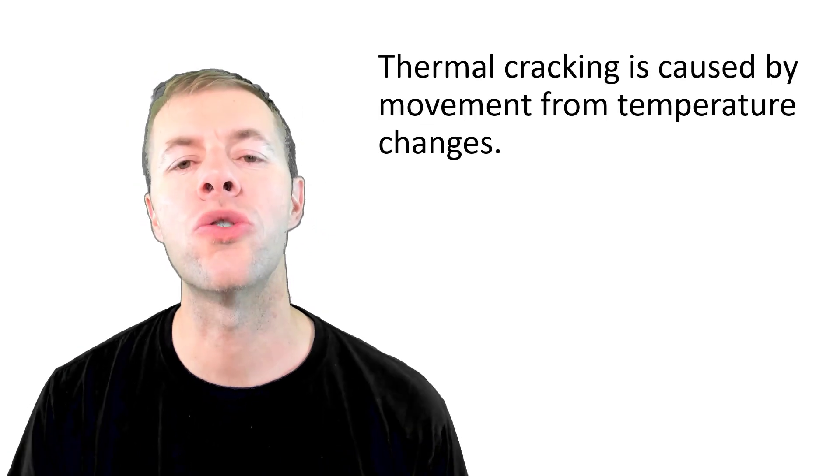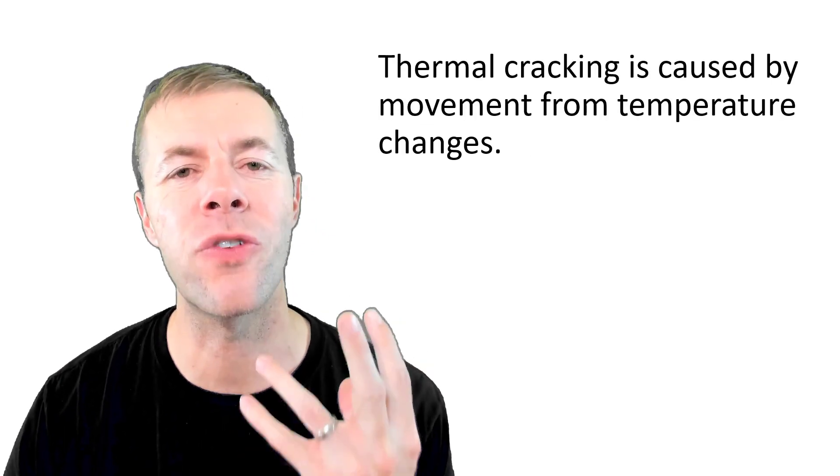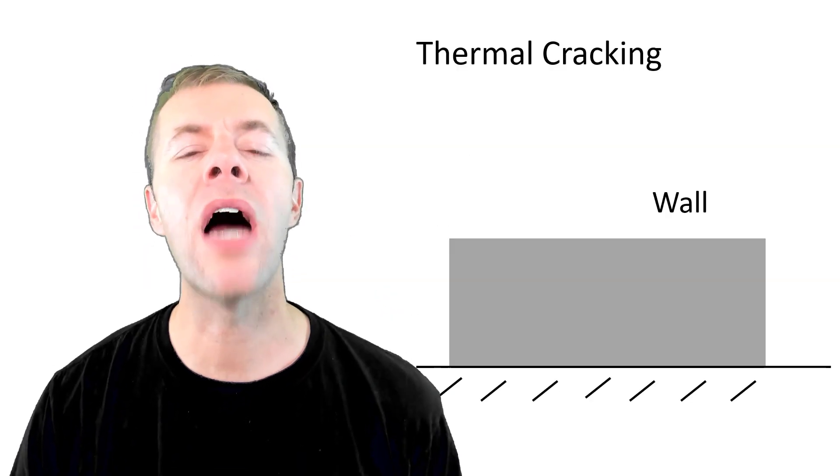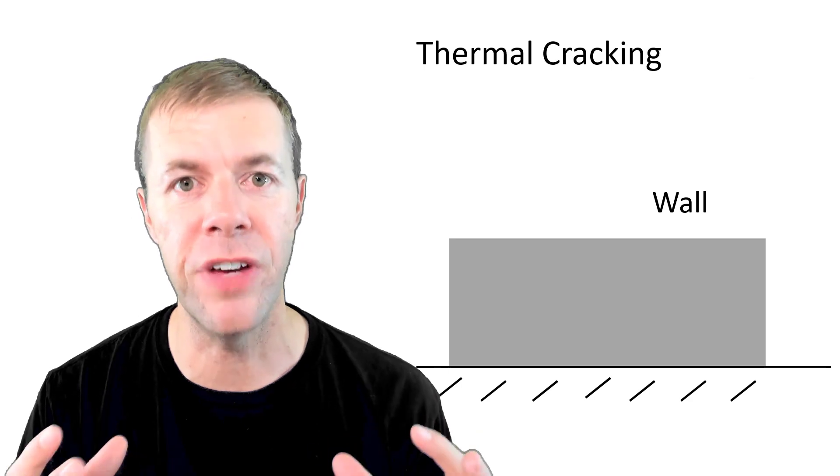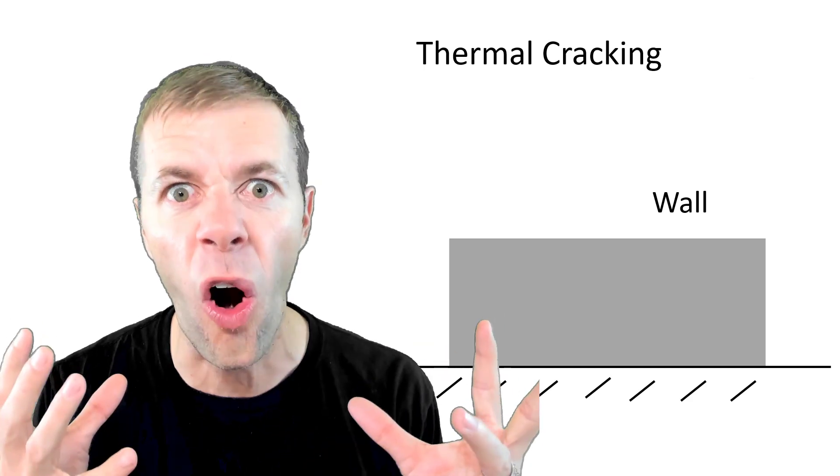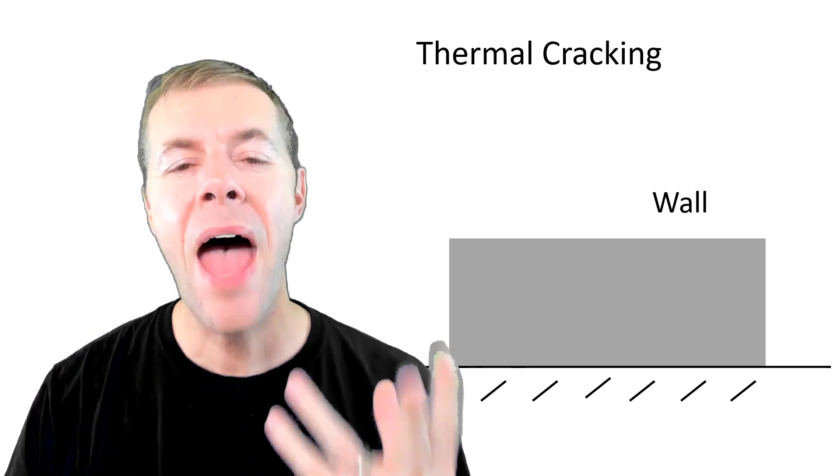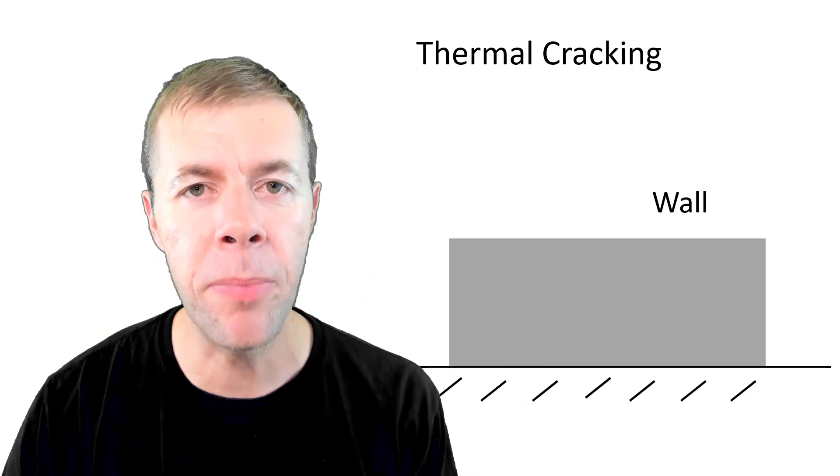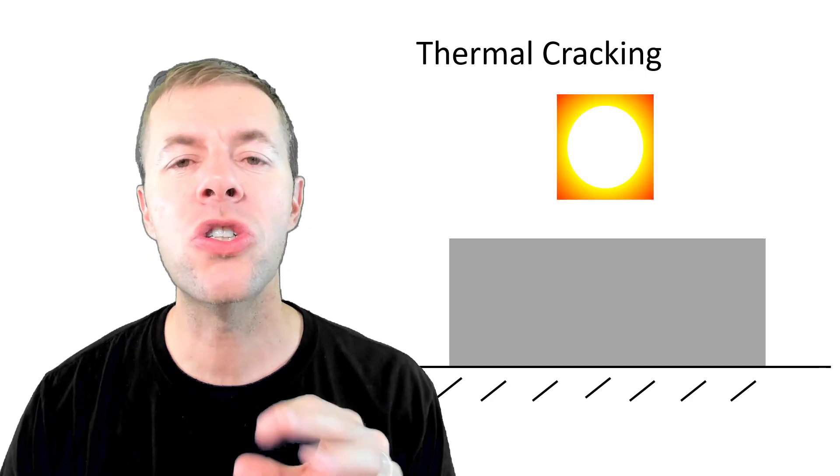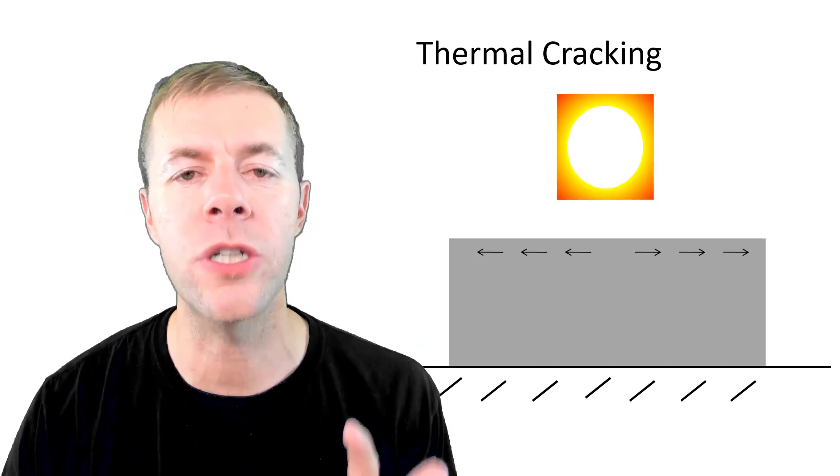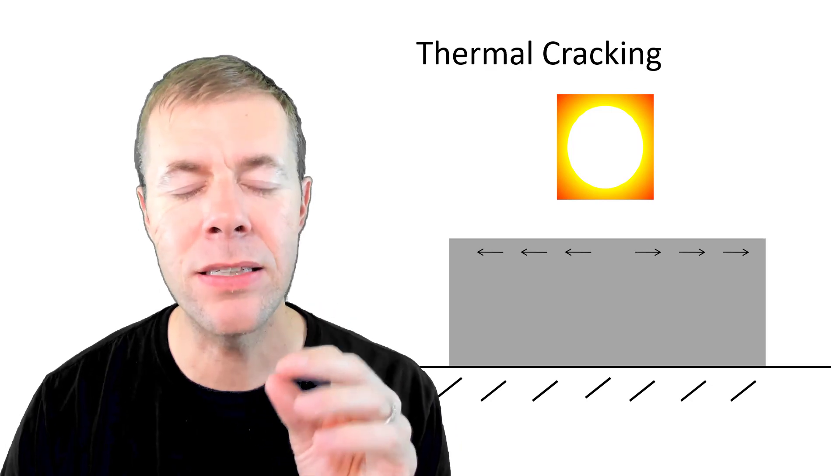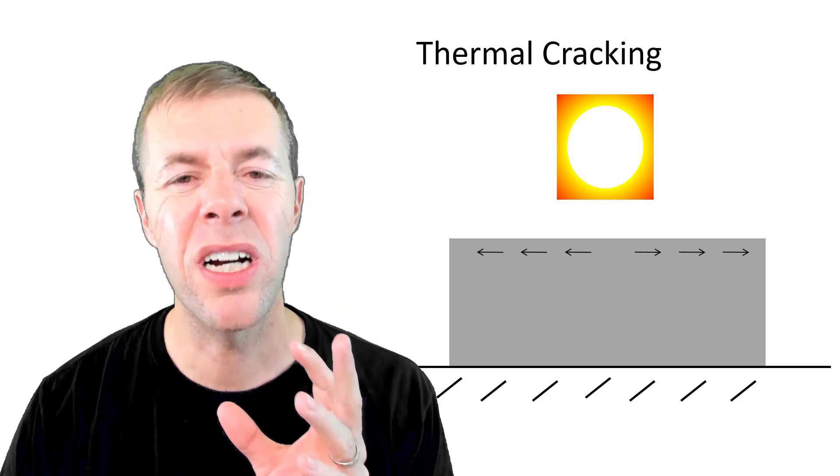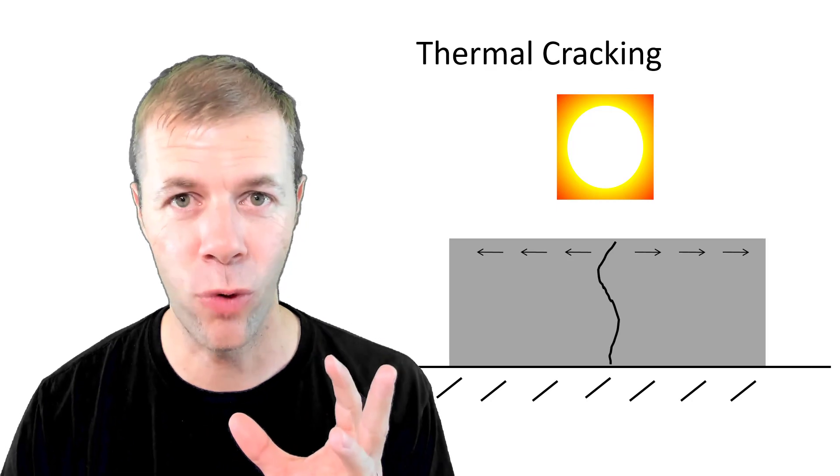Thermal cracking occurs when movement happens from temperature changes. There are two main types. In type number one, I've already got a structure that's finished. It's already in place, hard, ready to rock. In this structure I'm showing here is like a wall that's restrained at the bottom. Once the sun comes beating down on the wall and it tries to expand, the base is going to hold it back, restrain it. This will cause a stress and a crack to form in the middle of the wall.